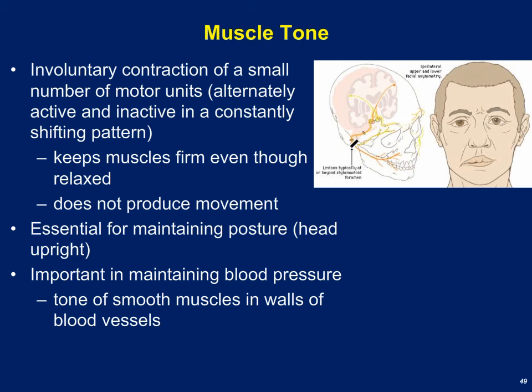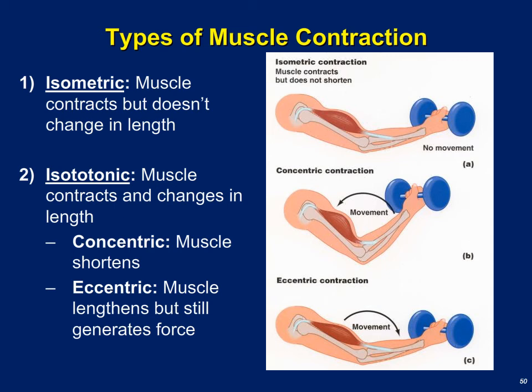Different types of muscle contraction can be divided into two groups: isometric and isotonic — iso meaning same and metric meaning length. An isometric contraction is one where the muscle is forming cross bridges but not actually changing in length. For example, if you were given a 30-pound dumbbell and told to hold it without moving it, you're still generating force with your muscles to oppose the force of gravity — cross bridges are still forming within your muscle even though the weight's not moving. We call this an isometric contraction.